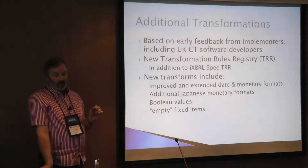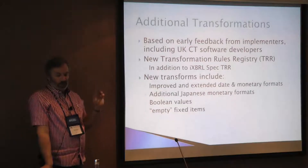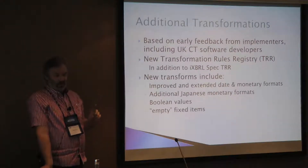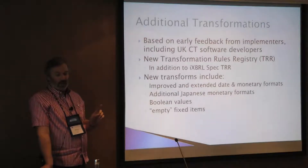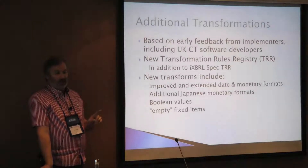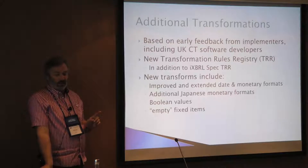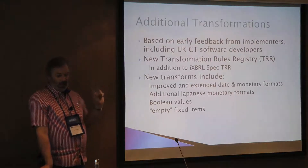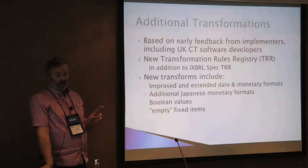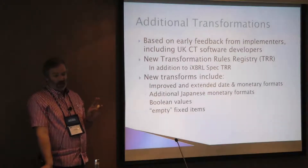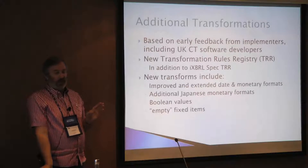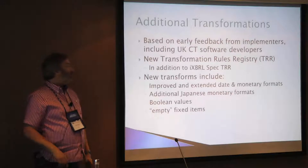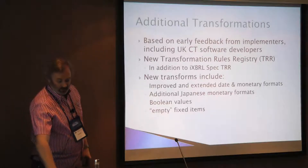So the new transforms, as we saw in the table, include some improved and extended data and monetary formats — we're still working on some of the monetary formats — and there are some additional Japanese monetary formats in the new transformation registry. But there were also two transforms for Boolean values and one called no content for empty fixed items, and I'm going to attempt to explain the use case for both of these types of transforms.